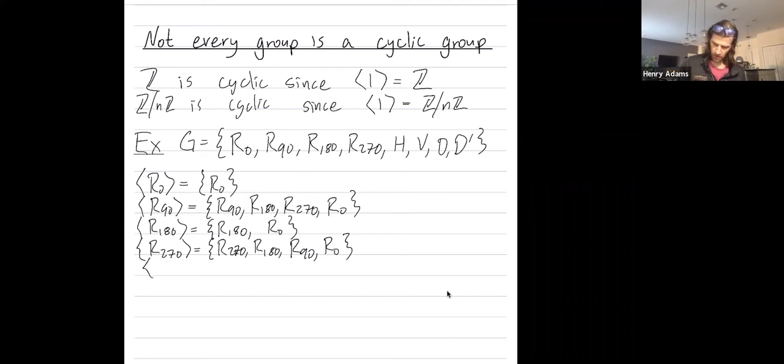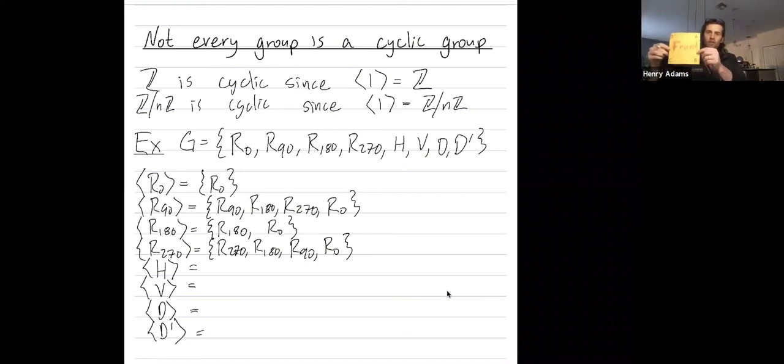So now let's look at the cyclic subgroups generated by the four flips. When I flip across the horizontal axis, I get the horizontal flip. But then when I do it again, I get the identity. And that's the same pattern for all the flips.